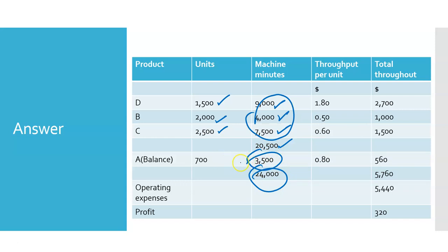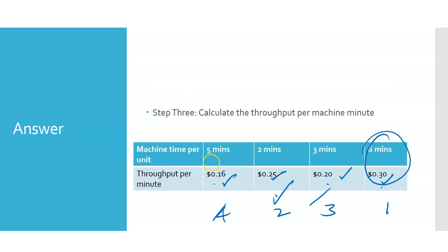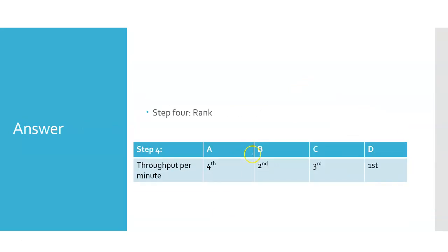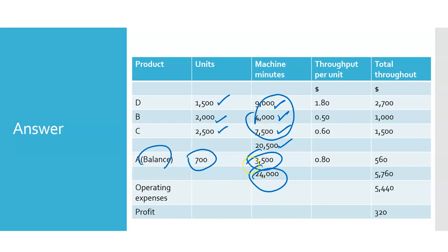And therefore, I can only use the rest to make A. And let's look at A. If you remember, A needed five minutes. So, if I go back here, that's why I have, if I only have 3,500 minutes, and each requires five minutes, I can only make, say, 700 units, ultimately. And then I can calculate my throughput, because I know what the throughput is per unit.